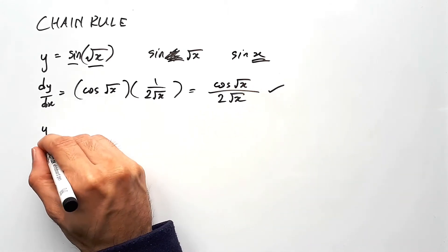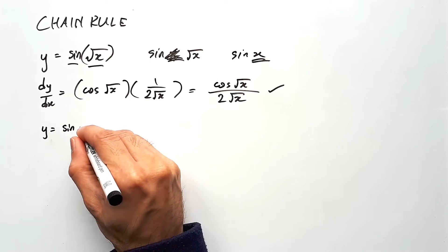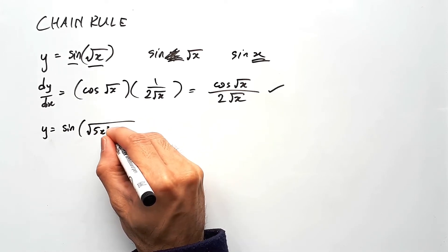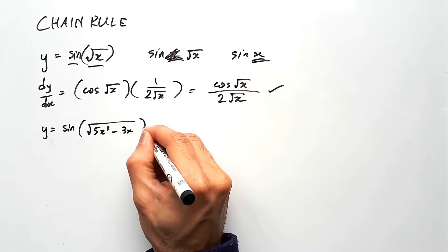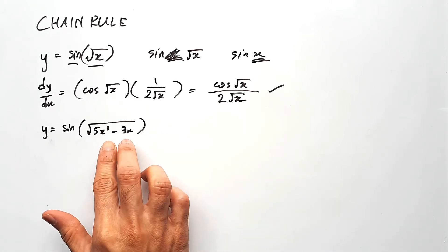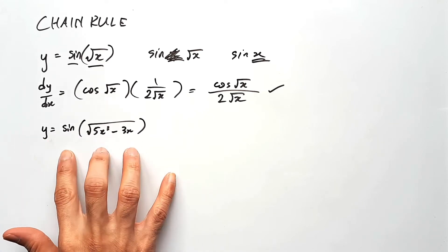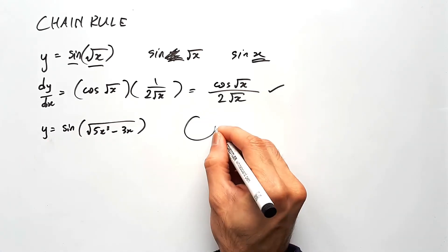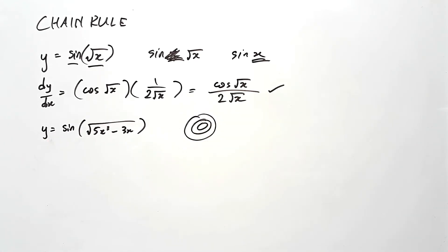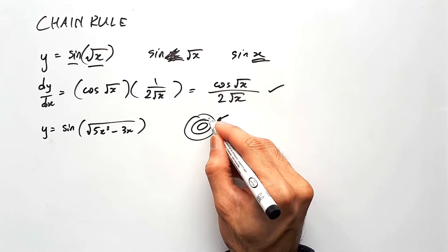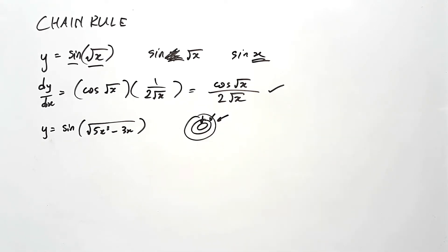But we are trying to differentiate y equals sine of the square root of 5x cubed minus 3x. So what we have is a cubic function inside a square root function inside a sine function. And because they are just one layer inside another inside another, what we can do is just work our way in from the outside, differentiating it one at a time.